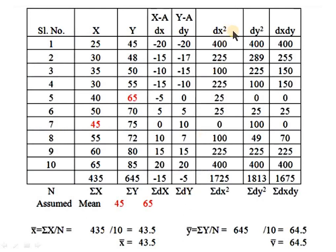Now we compute dx² for each value: (−20)²=400, (−15)²=225, (−10)²=100, (−15)²=225, (−5)²=25, 5²=25, 0²=0, 10²=100, 15²=225, 20²=400. The total Σdx² equals 1725.